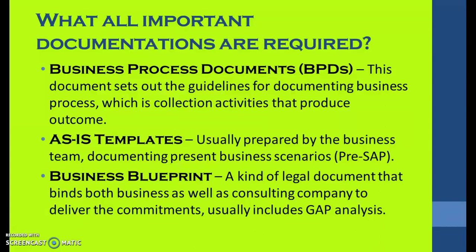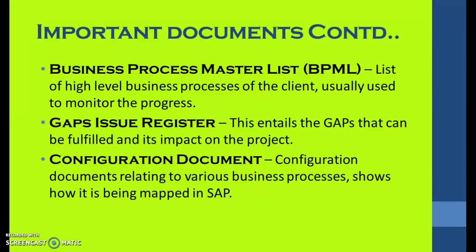The Business Blueprint is a kind of legal document that binds both the business and the consulting company to deliver commitments, and usually includes gap analysis as well. Templates for this are also available from SAP and shared with the implementing company. The Business Process Master List (BPML) is a list of high-level business processes of the client, usually used to monitor progress and gaps. The Issue Register entails gaps that can be fulfilled and their impact on the project. Configuration Documents are related to various business processes and show how they are being mapped in SAP.